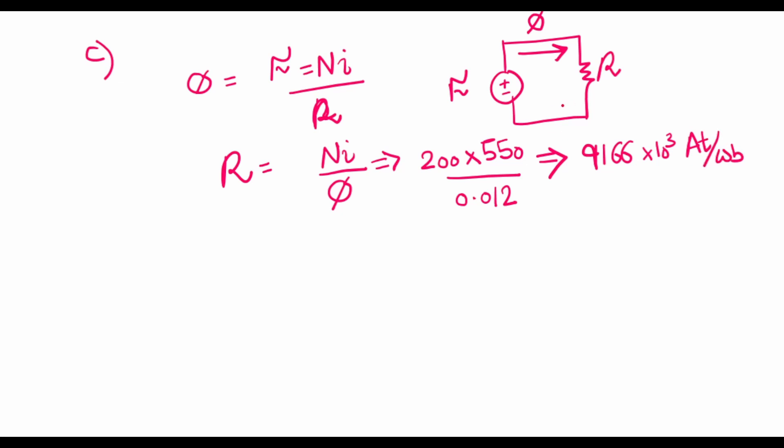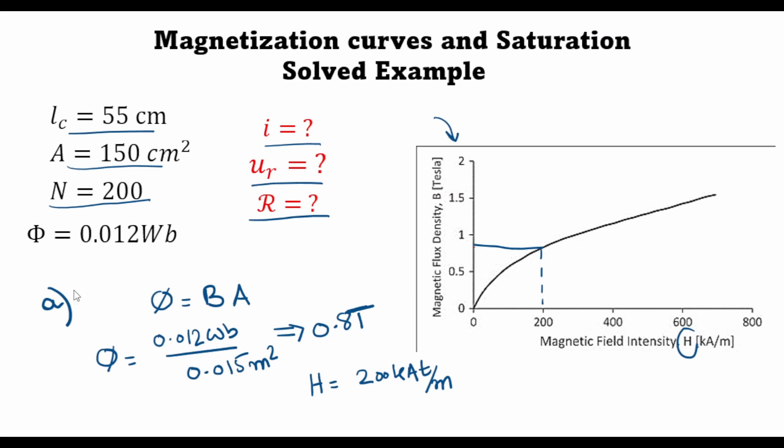Or in other words, this magnetic circuit offers a very high reluctance to the magnetic flux. Therefore, even at such a high current of 550 amperes, we are only getting a flux of around 0.012 Weber.